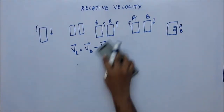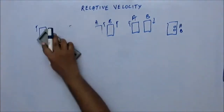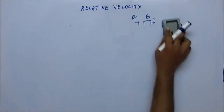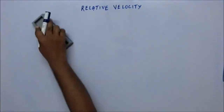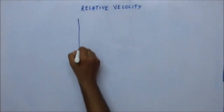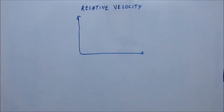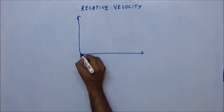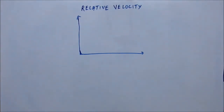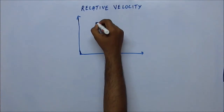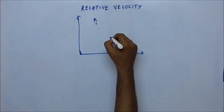Let's see the mathematical proof of this. Let's have a coordinate like this and let it be the origin. This is the point with respect to which we are looking at the velocity of each object. Suppose this is body A and this is body B.